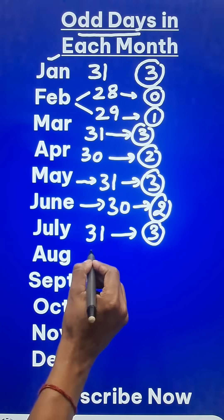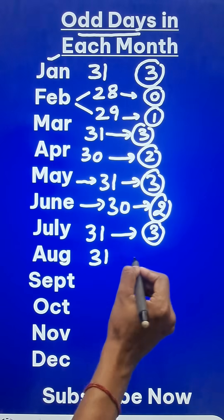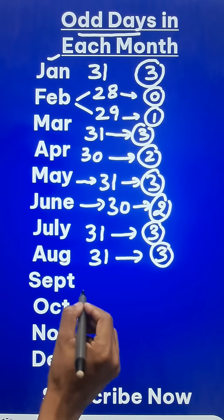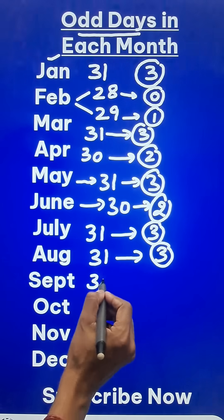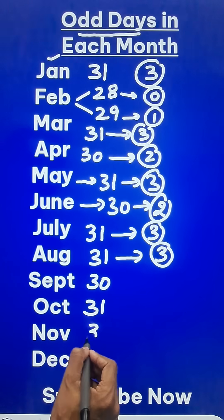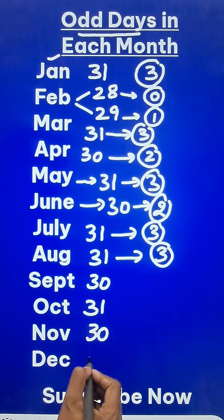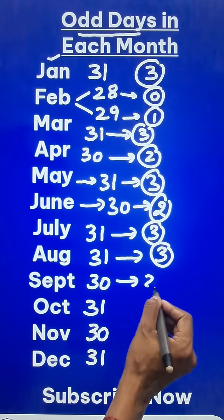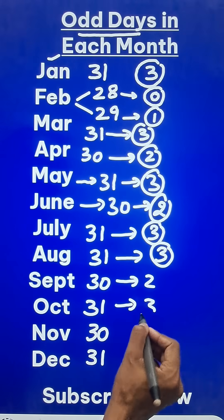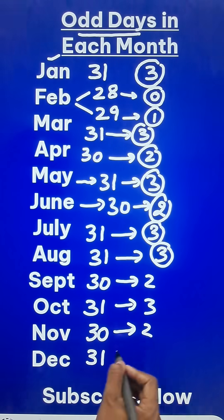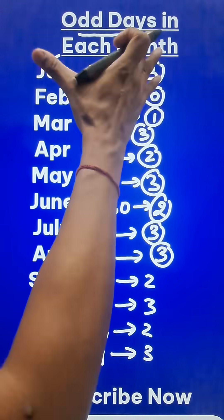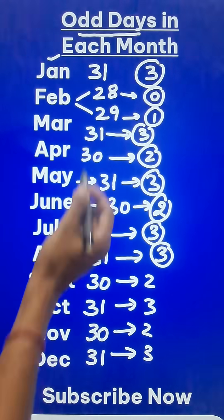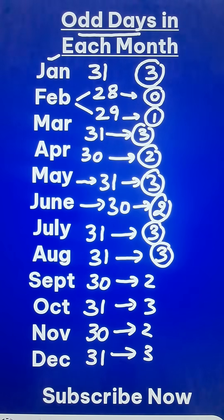Similar to July, August also has 31 days, so there are 3 odd days. September has 30, October 31, November 30 and December 31 — so there are 2, 3, 2 and 3 odd days respectively. So this is the concept of odd days in every month of the year.